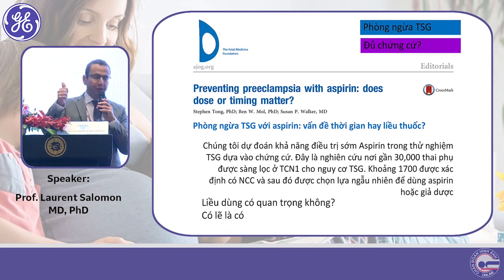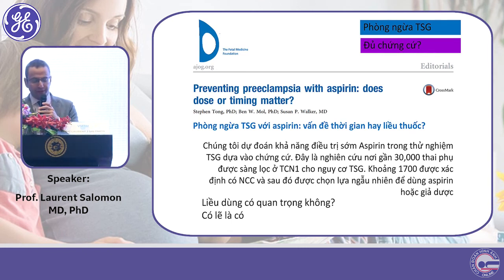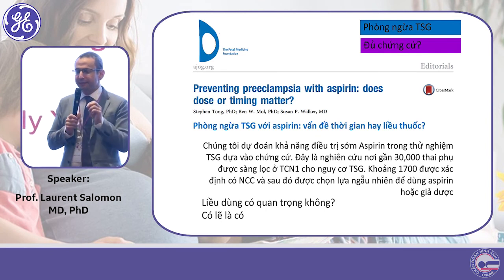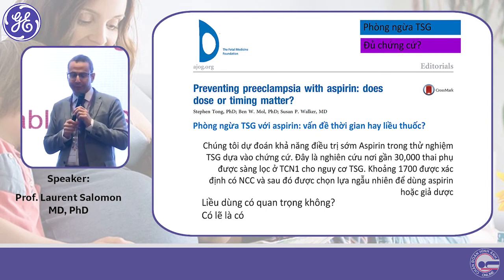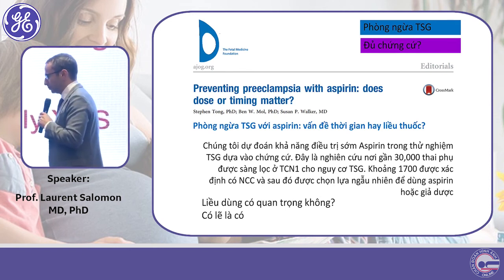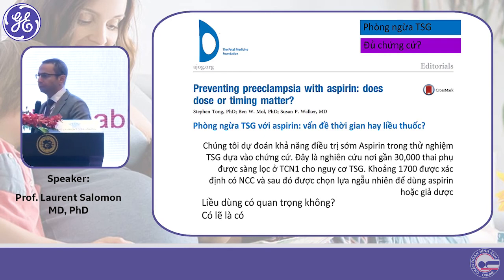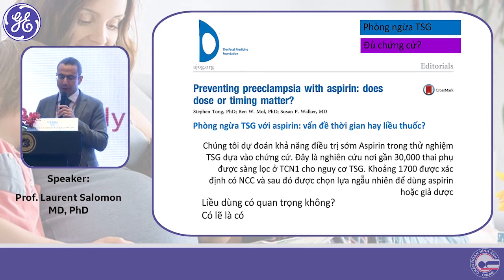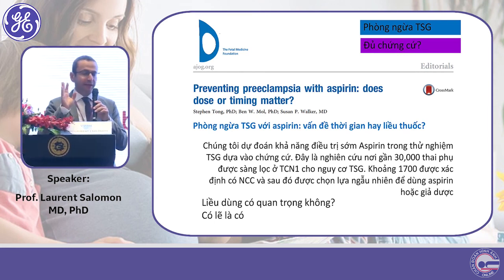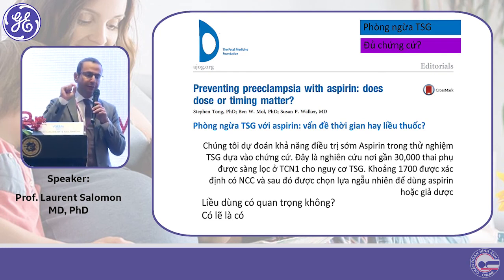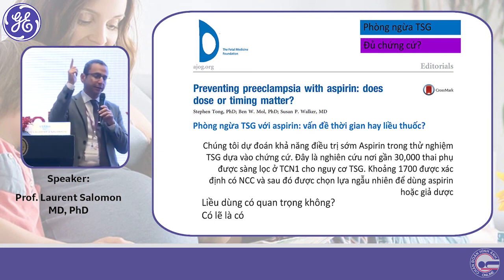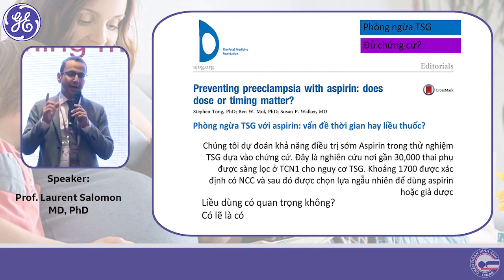It is important to give 150 milligrams and important to give it at bedtime, because that is the moment when the anti-platelet activity is most efficient for aspirin. To summarize: combine screening in the first trimester, done properly following the FMF guidelines, and if you screen a woman as high risk, give aspirin 150 milligrams at bedtime.